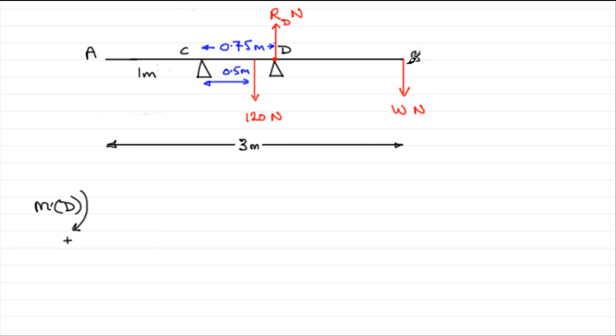So we need to take the moment of the weight W about D, so it's going to be W times this distance. Well, we know it's 1.75 from A to D. The rod is 3 meters long, so this distance must be 1.25 meters. So let's just mark that in, 1.25 meters. So we've got W times 1.25.